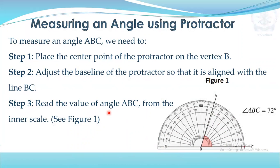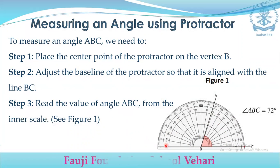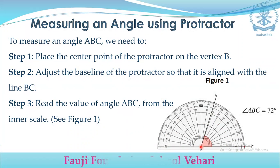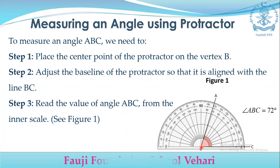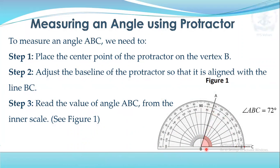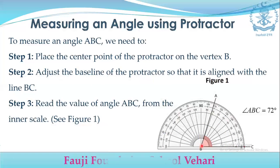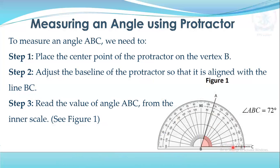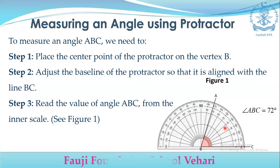Step 3 — read the value of the angle ABC from the inner scale. When you keep the protractor on the left side at the vertex, you have to read the inner scale. The inner scale starts at 0 on the right side. Reading the inner scale, the value is 70.